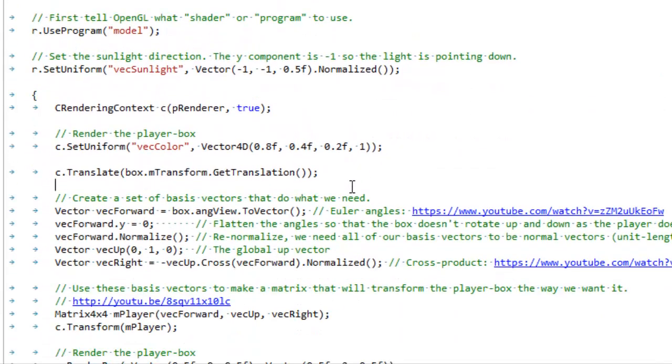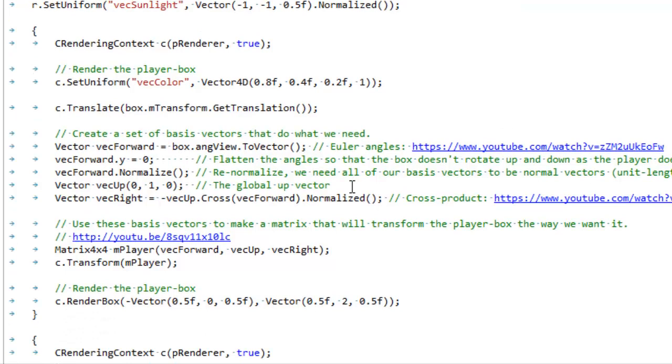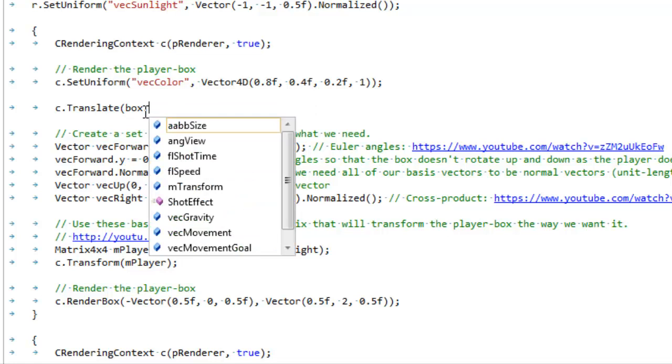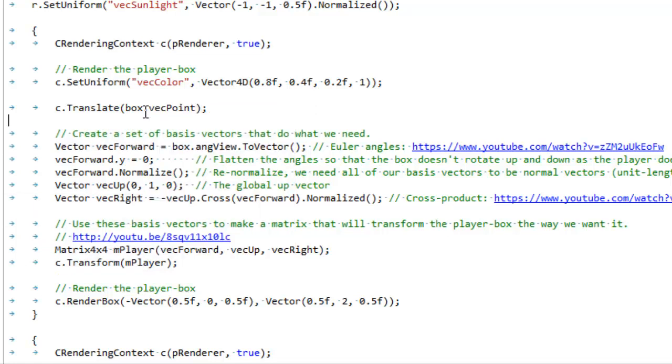And so we're going to go all the way down to the rendering code. Here we go. The rendering code where we're rendering the player box. And before this said something like box.vecPoint. So we were translating the player box where we're rendering it by where the location of the player was. But now this is done in a matrix. So we have to get that matrix and then we have to get its translation and pass that into the translate function.